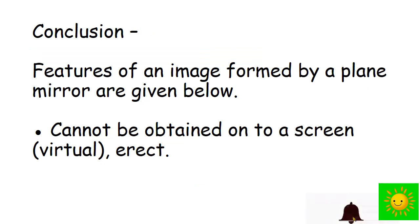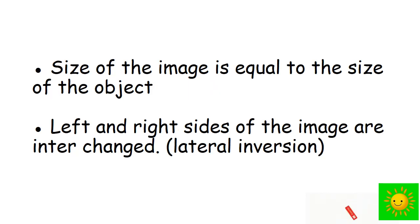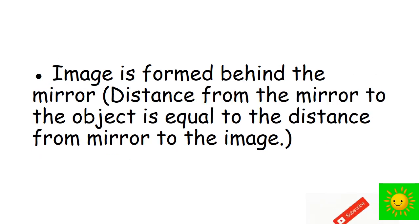As a conclusion, the features of an image formed by a plane mirror are given below. The image cannot be obtained on a screen — it is virtual. The size of the image is equal to the size of the object. The left and right sides of the image are interchanged — that means lateral inversion is present. The image is formed behind the mirror, meaning the distance from the mirror to the object is equal to the distance from the mirror to the image.